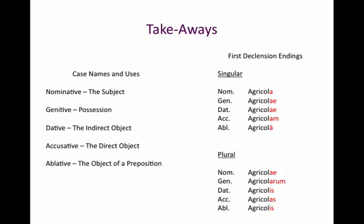That concludes our lesson on the first declension. There are two very important things to memorize: first, the names of your cases and their uses — nominative, genitive, dative, accusative, and ablative. Second, your first declension endings, shown in red. Remember, when forming these words you always go to the genitive singular, drop off the -ae to get your stem — agricol — and then add the endings. You can memorize them in any manner you want, but I would suggest making some flashcards and coming to class prepared. Thank you very much.